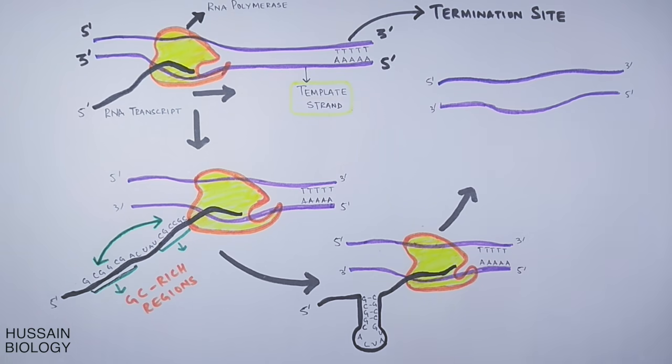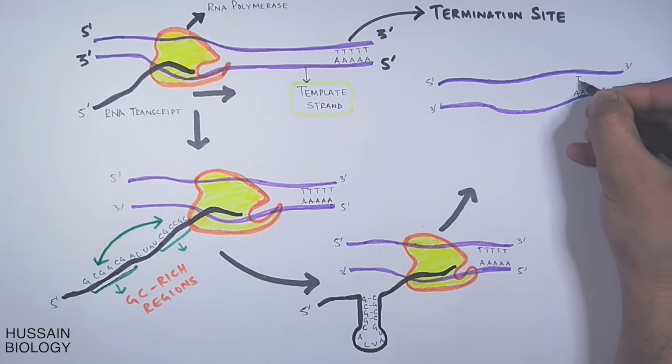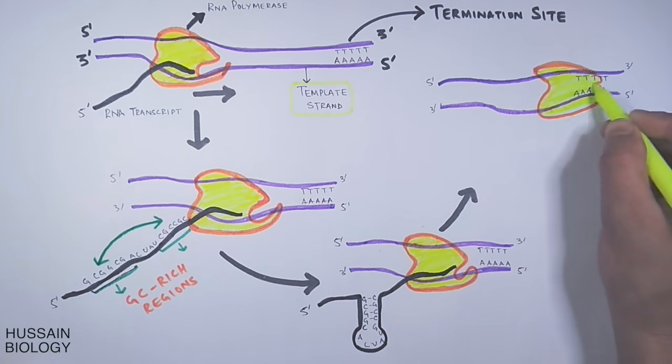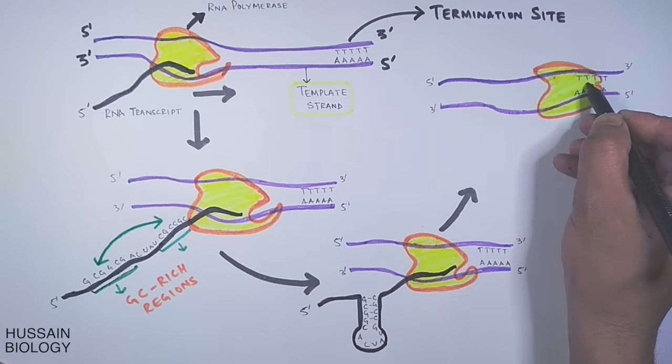But to pull out the RNA molecule from the polymerase machinery, it needs a weak link that should break easily. This is provided by the AT-rich region DNA.